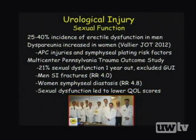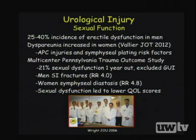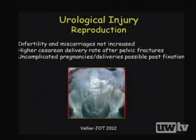Wright's group excluded all patients with identified genitourinary injury at presentation from the Pennsylvania Trauma Outcome Study and still reported 21% sexual dysfunction incidence. Men with sacroiliac fractures had higher rates of sexual dysfunction; women with symphyseal diastasis had higher rates, correlating with quality of life scores. Women can have uncomplicated pregnancies post-fixation, though they have higher C-section rates, mainly due to obstetrician and patient preference rather than actual birthing difficulty.